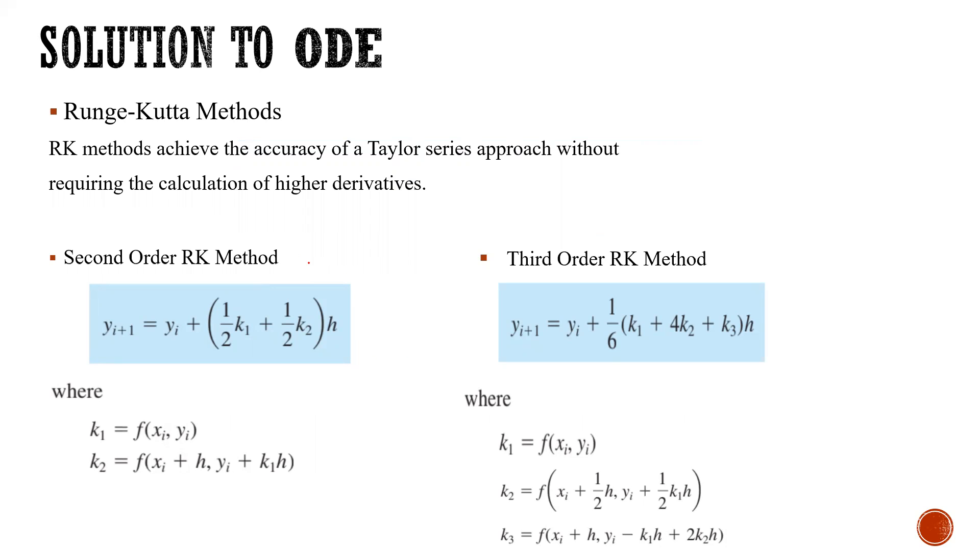The second order RK method is given as y_{i+1} equals y_i plus (1/2 k_1 plus 1/2 k_2) times h. Here k_1 and k_2 are given as f(x_i, y_i) and f(x_i plus h, y_i plus k_1 h). Similarly, the third order RK method is calculated.